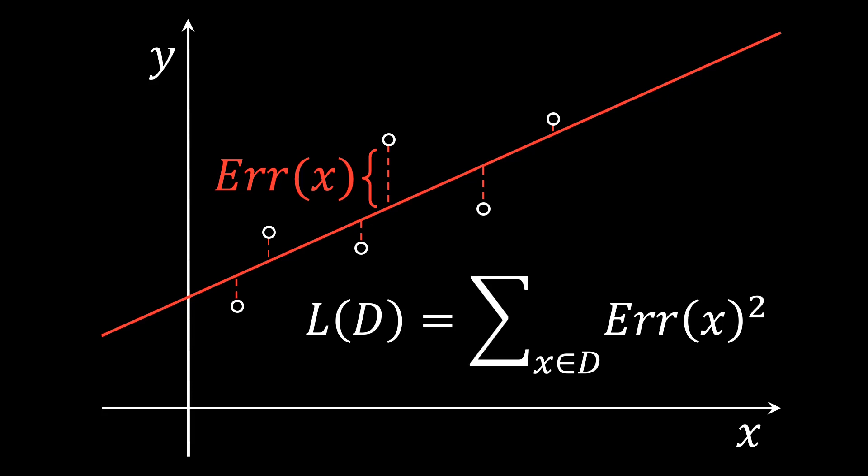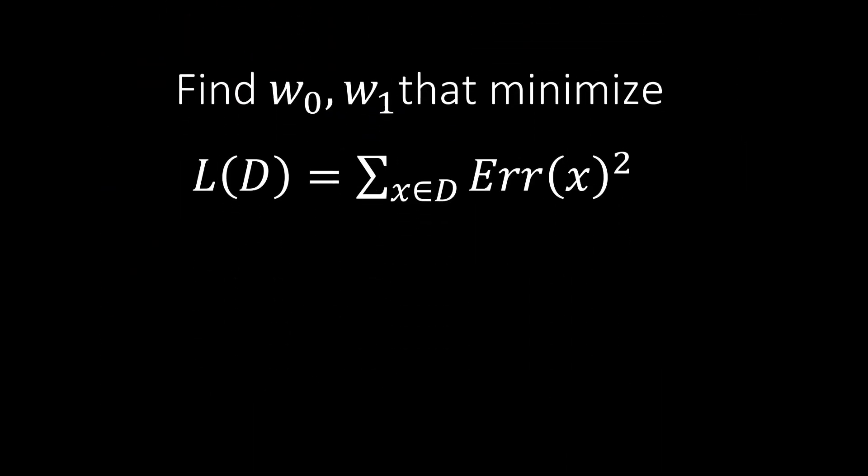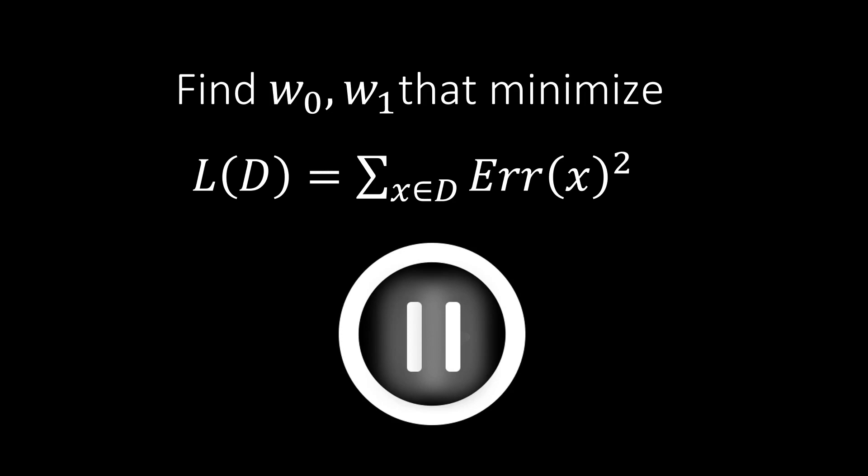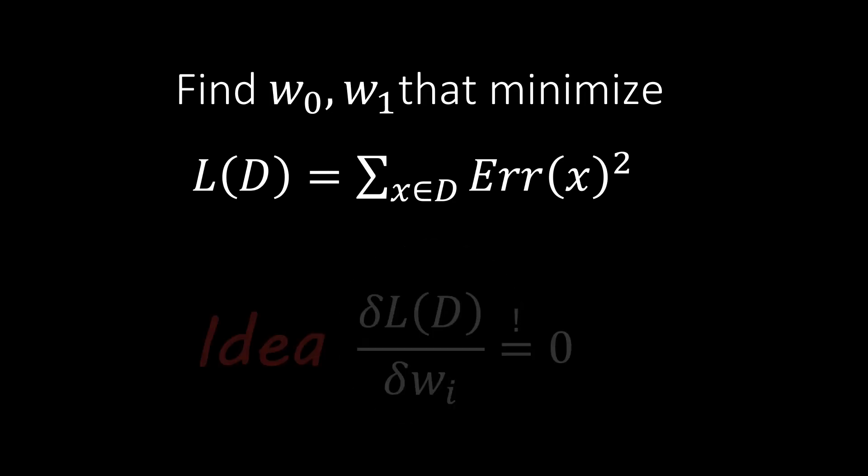Given the loss function, our task can now be formulated as an optimization problem. We are interested in finding the weights that minimize the loss function. Please pause and think how you would solve this problem. From calculus we know that the minimum is attained at the location where the gradient is zero. We can therefore take the derivative of the loss function and set it to zero.